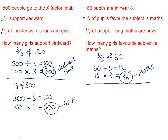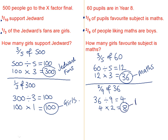Now we read the second part of the question. It says two-ninths of people liking maths are boys. So we want to work out two-ninths of 36, since there are 36 people liking maths. We take our 36 and divide it by the bottom number, which is 9. 36 divided by 9 is 4. We take that 4 and multiply it by the top number, which is 2, which gives us 8. That means 8 people who like maths are boys.